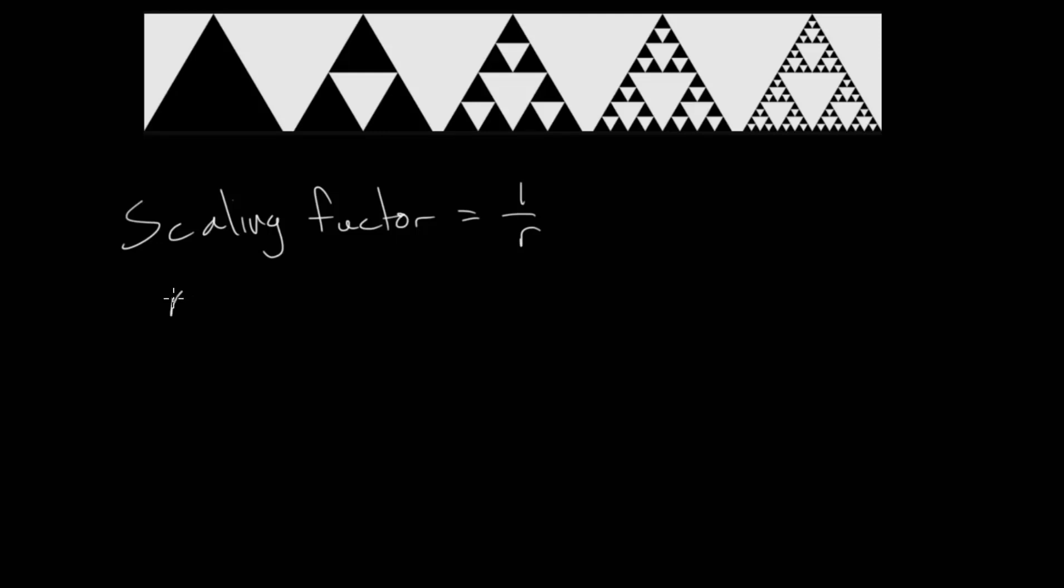We say that the number of pieces after dividing the shape is called n, and then we can call the dimension of the object D.